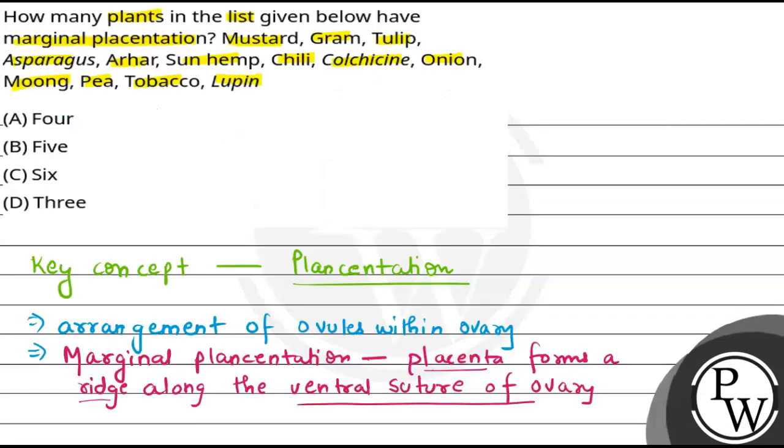So in total there are six plants. That is the reason our correct option here is option C. Best of luck, thank you.